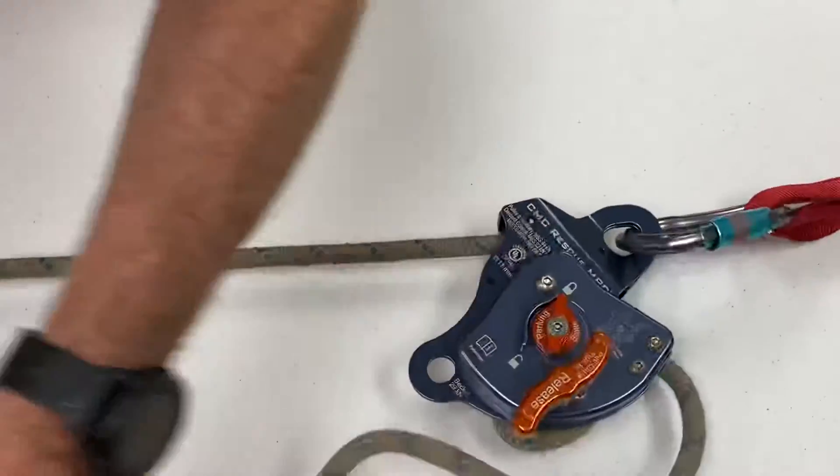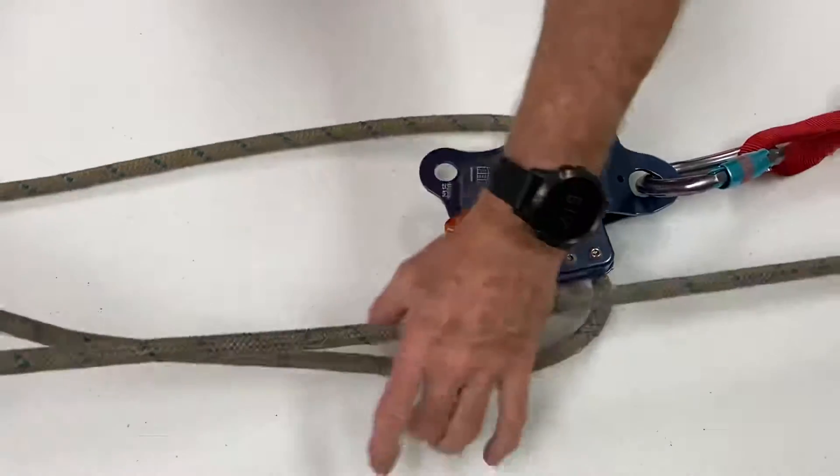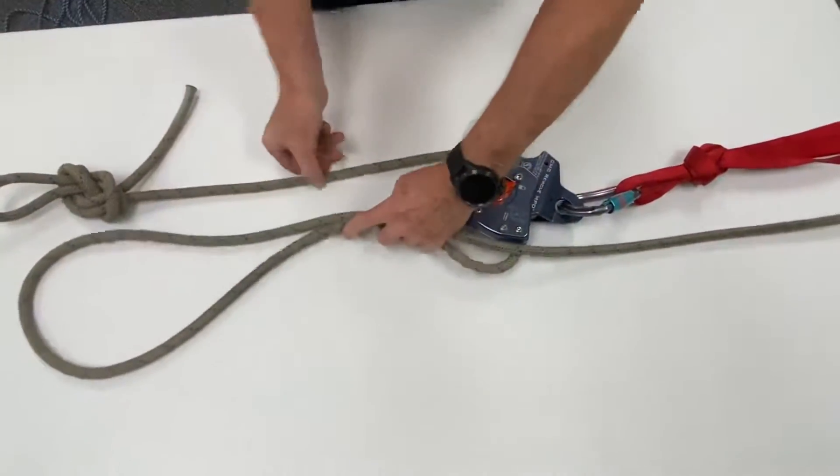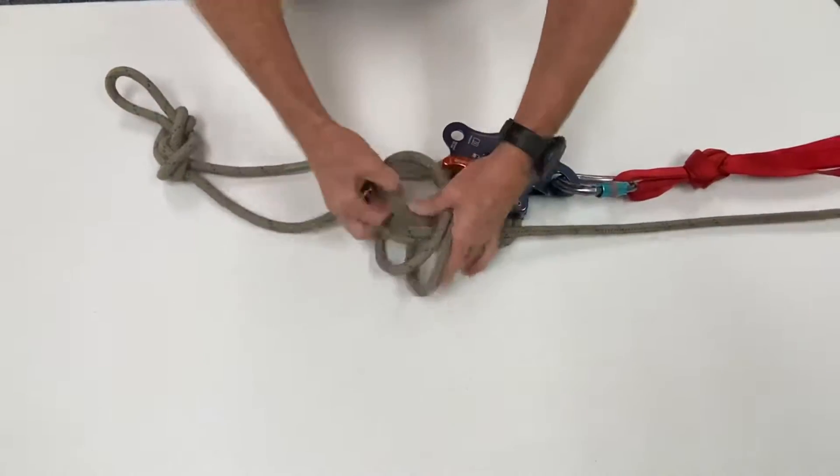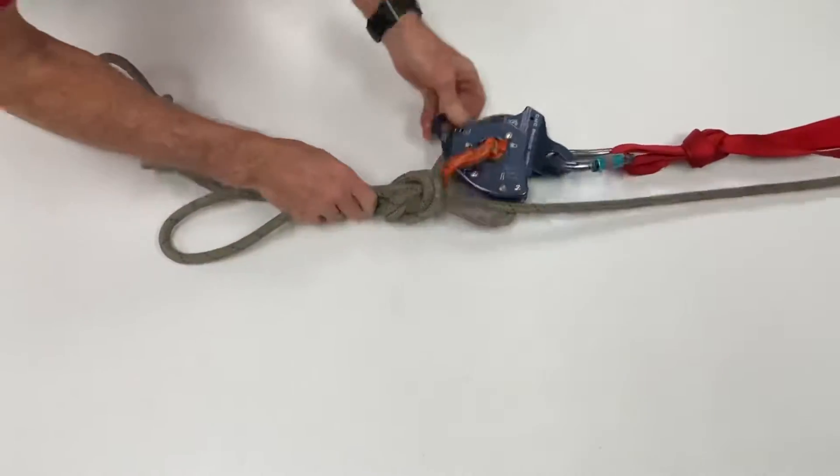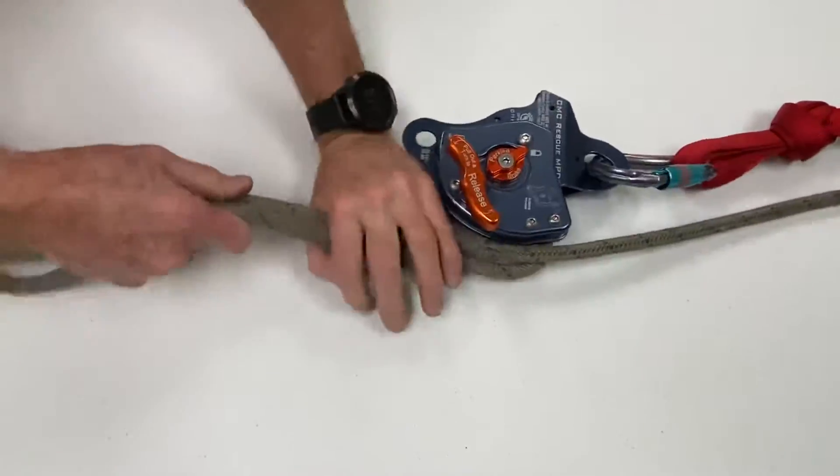And then to be able to tie it off and leave it, we're going to want to pull ourselves a bight out here. Just put an overhand right close to the MPD device.